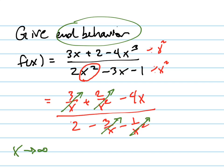Anything that has an x in the denominator is going to go to 0. And so this is going to simplify into negative 4x over 2, which just equals negative 2x.